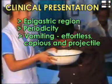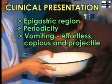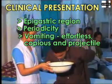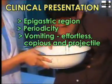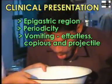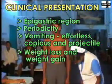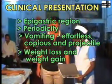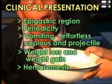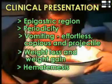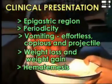Vomiting is not a notable feature unless stenosis has occurred. With stenosis, the vomiting is described as effortless, copious, and projectile, containing old food particles. Both weight loss and weight gain have been described. Vomiting blood, called hematemesis, and passing altered blood, known as melena, can occur when there is bleeding from the ulcer.